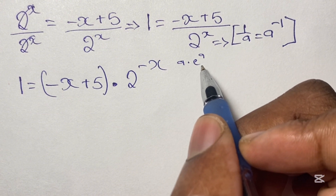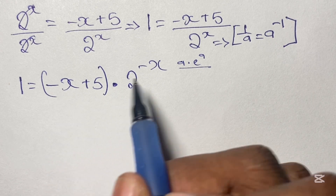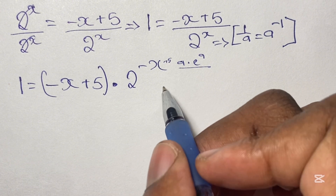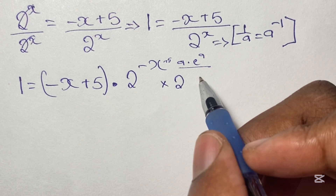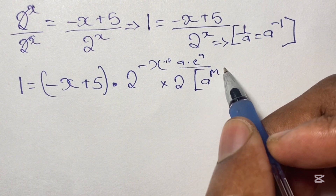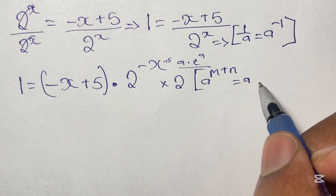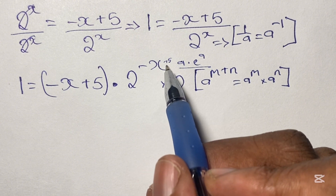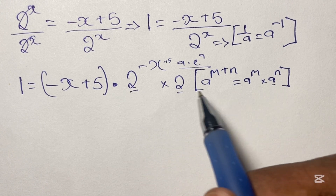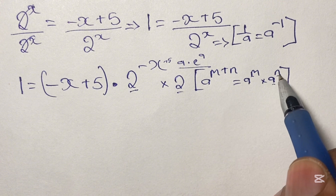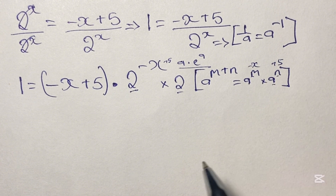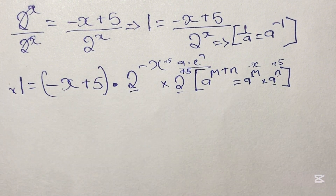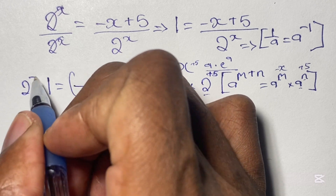As we are writing our equation in the form a times e to the power of a, we see we have negative x in both the term and the power, but we also have a plus 5 that needs to appear in the exponent. Using the law of indices where a to the power of m plus n equals a to the power of m times a to the power of n, we can split 2 to the power of negative x plus 5 into 2 to the power of negative x times 2 to the power of 5. Multiplying both sides by 2 to the power of 5, which equals 32, gives us 32 on the left-hand side.